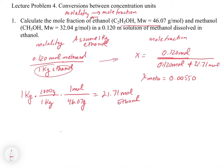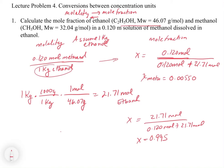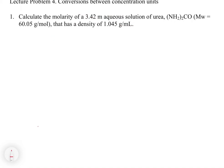We can solve the mole fraction of ethanol by taking 21.71 moles divided by 0.120 plus 21.71 moles, giving a mole fraction of 0.995. Another way would have been to subtract from 1: you could take 1 minus 0.00550 to get the mole fraction of ethanol — both give the same answer. You can see this is very straightforward as long as you understand what you have on one side and what you need on the other. In this second question, we're going from molality to molarity, and again you need to be able to go in both directions.